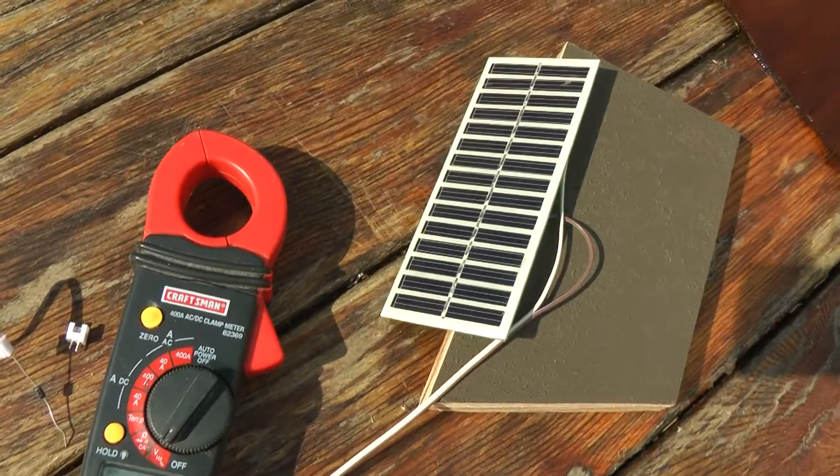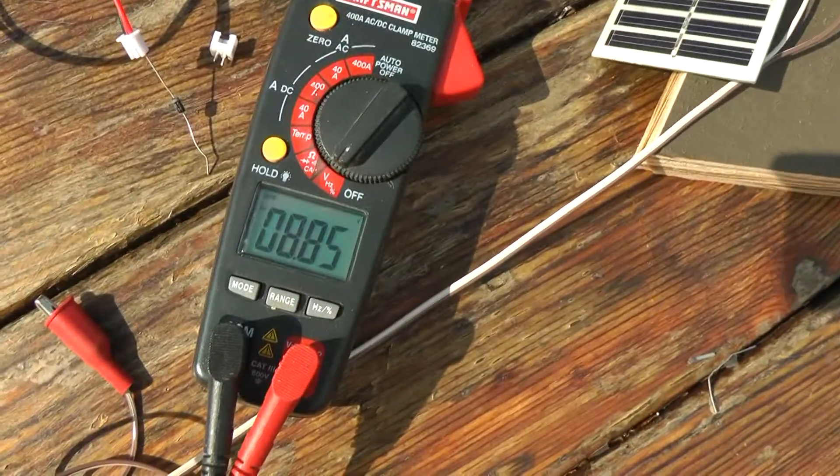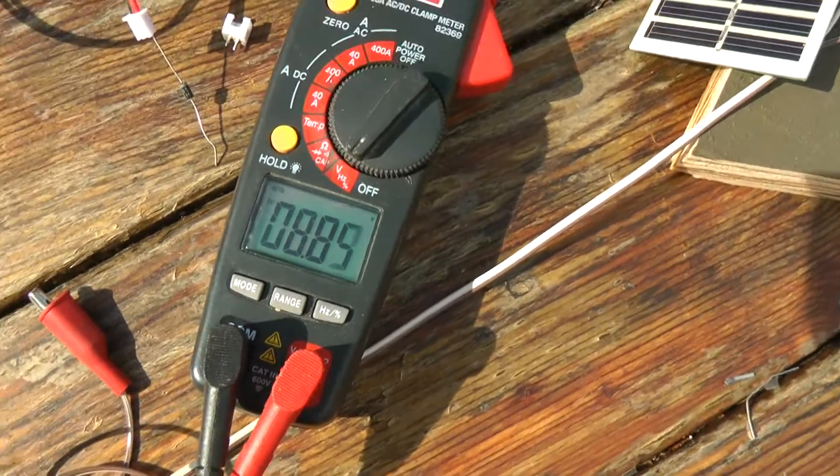Here with my solar panel pointed roughly at the sun, and no load on it, I'm getting 8.85 volts.